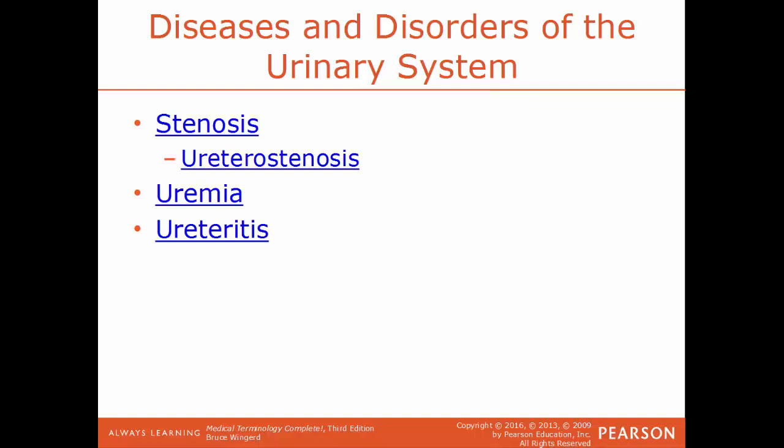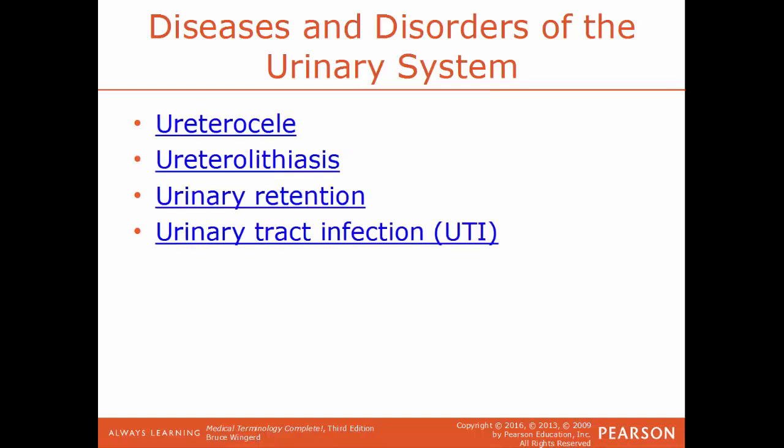Uremia is having an elevated level of urea within the blood. Ureteritis is an inflammation of the ureter. Ureterocele is a congenital defect where the ureter swells and balloons right where it meets the bladder, forming a sac-like pouch — more common in females than males. Ureterolithiasis is a condition of having stones within the ureter.